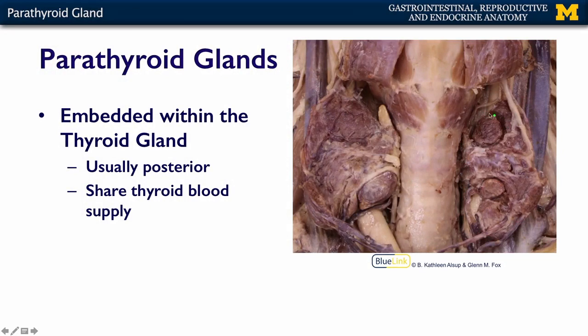The parathyroid glands are in the same region as your thyroid gland — actually, they're embedded within your thyroid gland. This is a rather close-up shot; we've cut the thyroid on the midline and peeled it open, and here you can see one, two, here's another one, and here's another one — a parathyroid gland. They can be anywhere from two to three to four or five parathyroid glands. They're usually posterior, which is what you're seeing here — the posterior aspect of the thyroid gland — and they share the thyroid blood supply. If you were looking at them not in a close-up, they'd be about the size of a pea or a lentil.